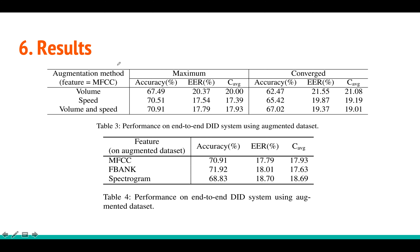The top results table shows end-to-end dialect identification without linguistic features. Each row corresponds to a different augmentation method: volume perturbation gives 67% accuracy, speed perturbation gives 70%, and combining both gives 70.6%. For different acoustic input features: MFCC gives 70%, FBank gives 71%, and spectrogram gives 68%. FBank is the best among the three input types.